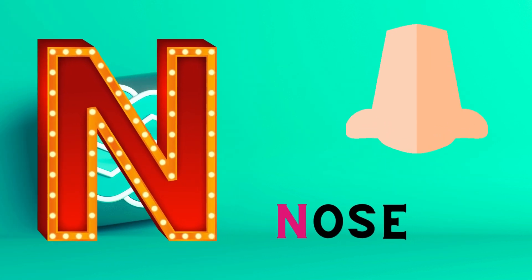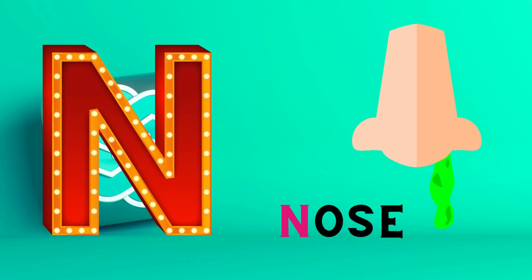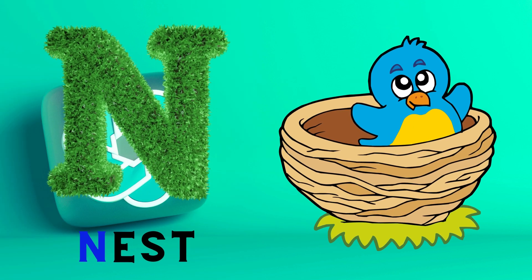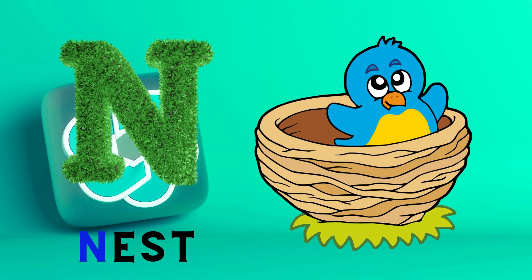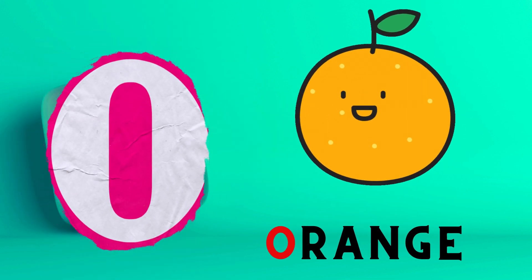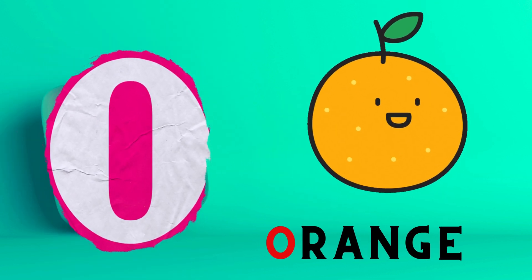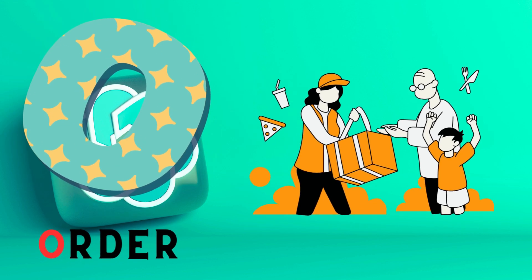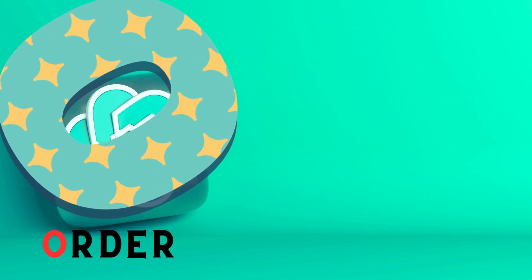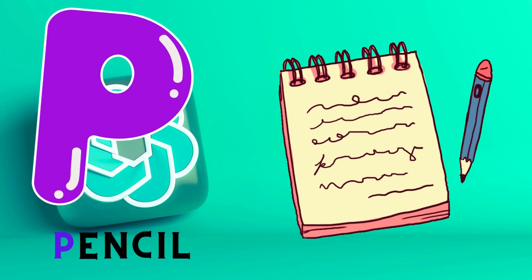N is for Nose. N. Nose. N is for Nest. N. Nest. O is for Orange. O. Orange. O is for Otter. O. Otter.